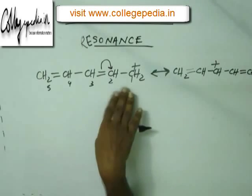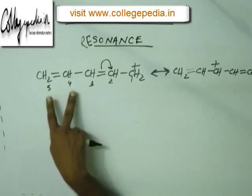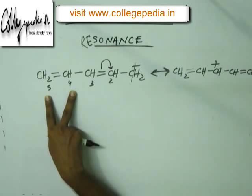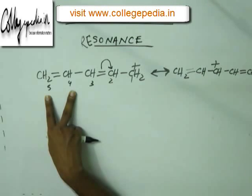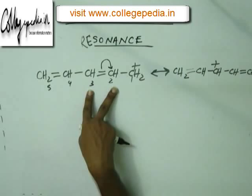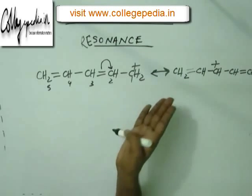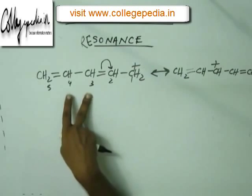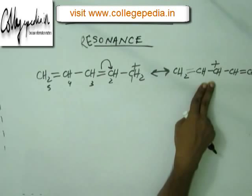At a time we break only one bond. The bond between C4 and C5 will not be broken simultaneously — it remains as it is. In drawing resonating structures, we break only one bond at a time. So now we have broken the bond between C2 and C3 and the plus charge has jumped from C1 to C3.